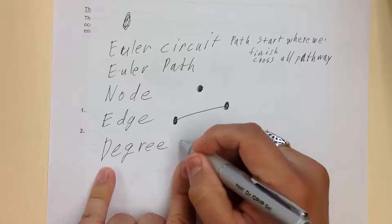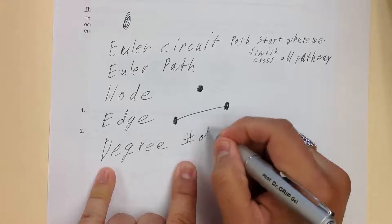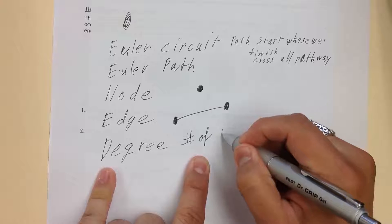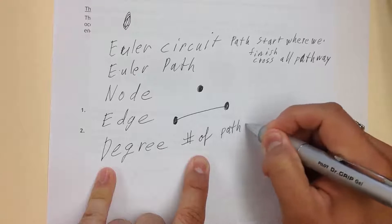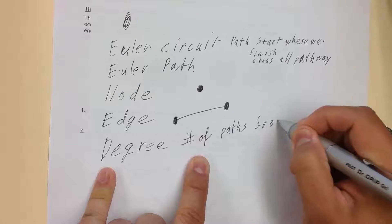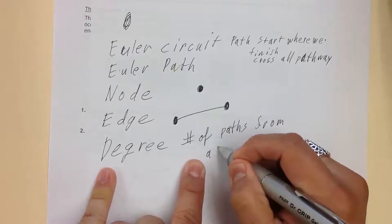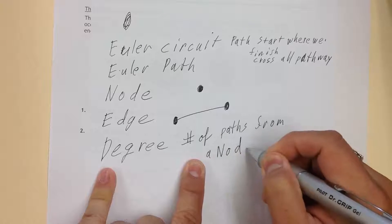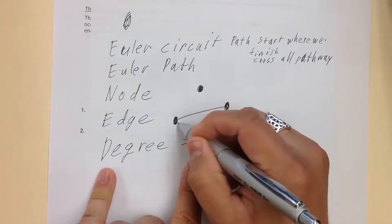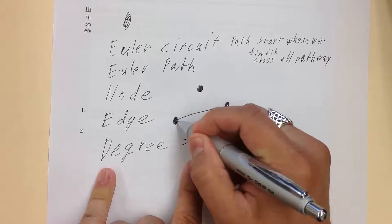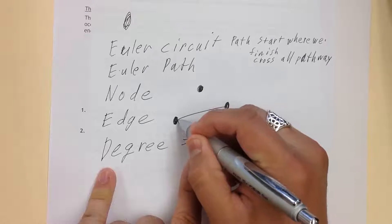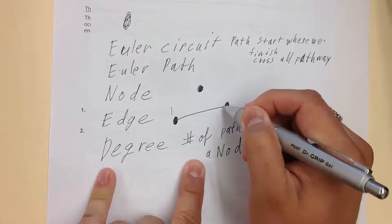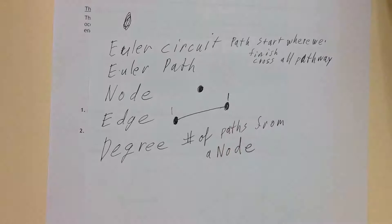Degree is the number of paths from a node. You take a look at this dot, this edge, and look at the number of paths that leave it. There's only one here, and same thing over here, there's only one. So that's the degree of the node.